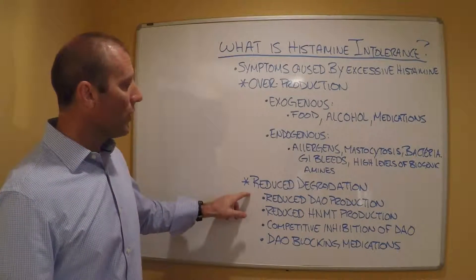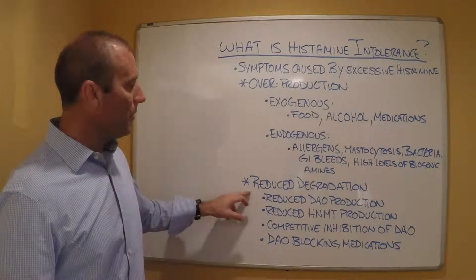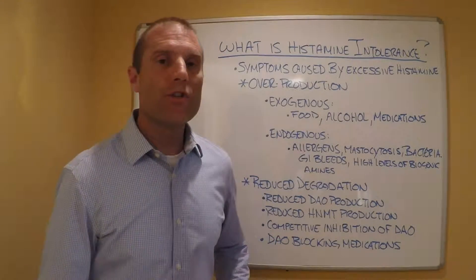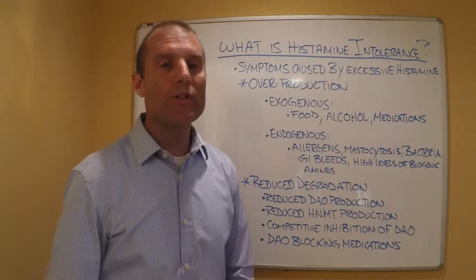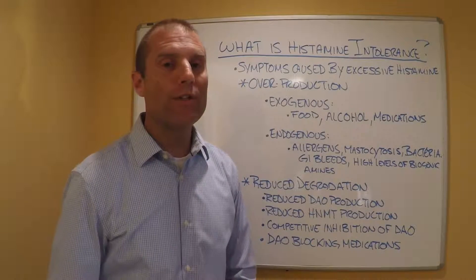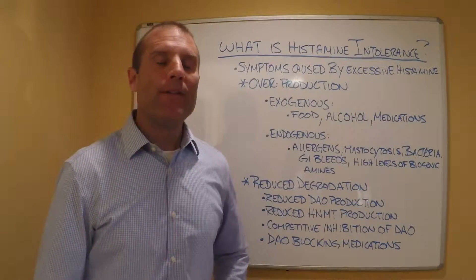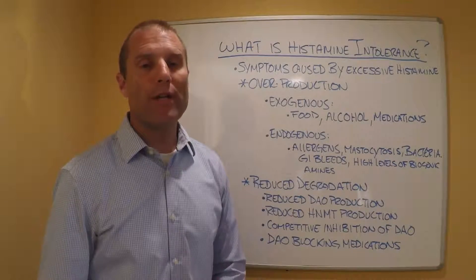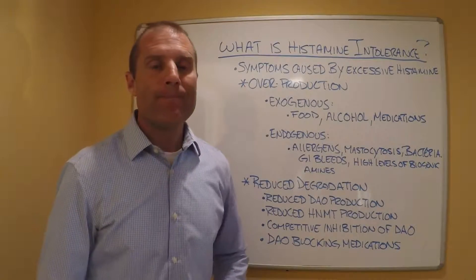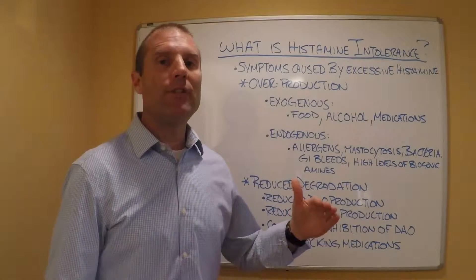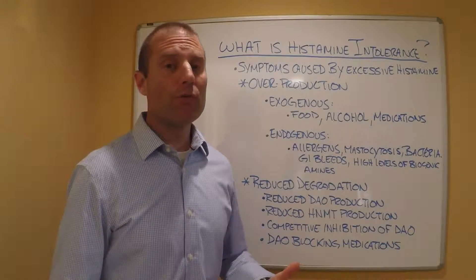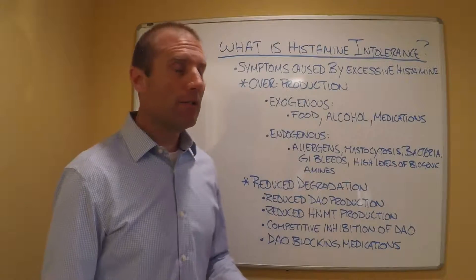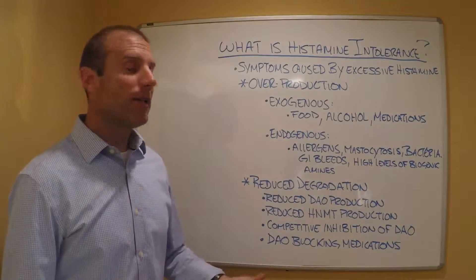What causes a reduced ability to break down histamine? There are two primary enzymes associated with its breakdown: one is called DAO, diamine oxidase, and the other is called HNMT, histamine N-methyltransferase. If you have decreased production of those two enzymes, you can have a buildup or reduced breakdown of histamine.